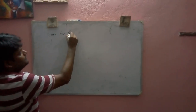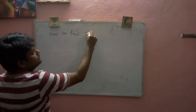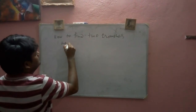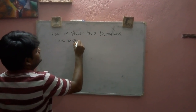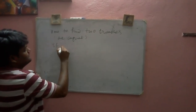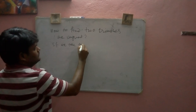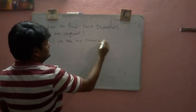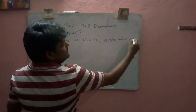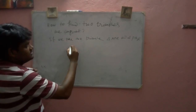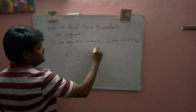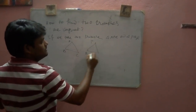How to find two triangles that are congruent. It may be two triangles ABC and triangle PQR. Suppose this is triangle ABC and this is triangle PQR.